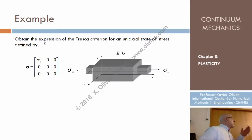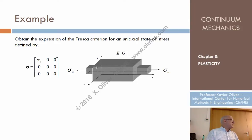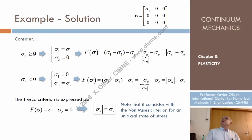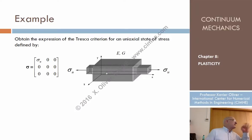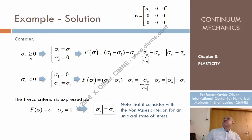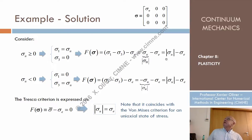For instance, if we apply the Tresca criterion to the uniaxial stress state, sigma_u can be positive or negative. If positive, sigma_1 is sigma_u and sigma_3 is 0. If negative, sigma_1 is 0 and sigma_3 is sigma_u. So the criterion in that case returns: modulus of sigma_u minus sigma_e equals zero. Both cases give the same result.